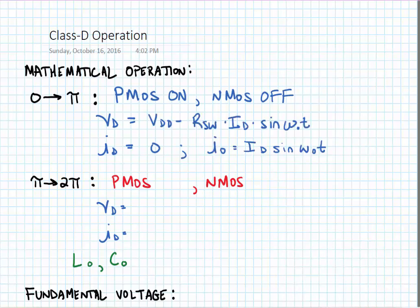So here we have the drain voltage is equal to VDD minus R switch times ID times sine omega naught T. We have that the drain current is zero, and we have that the output current is ID times sine omega naught T.